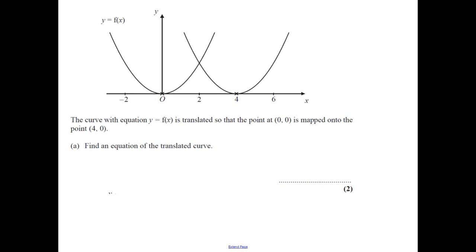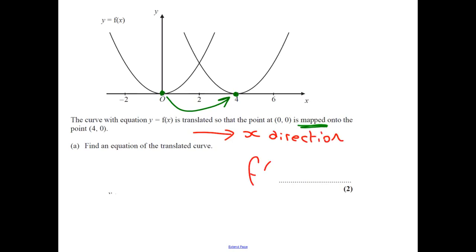The curve with equation y equals f(x) is translated so that the point at (0, 0) is mapped — that means moved — onto the point (4, 0), as we can see here. Find the equation of the translated curve. We've moved it 4 in the x direction. When we do it in the x direction, we do the opposite to our f(x) equation, so it's f(x − 4). The equation is y equals f(x − 4).